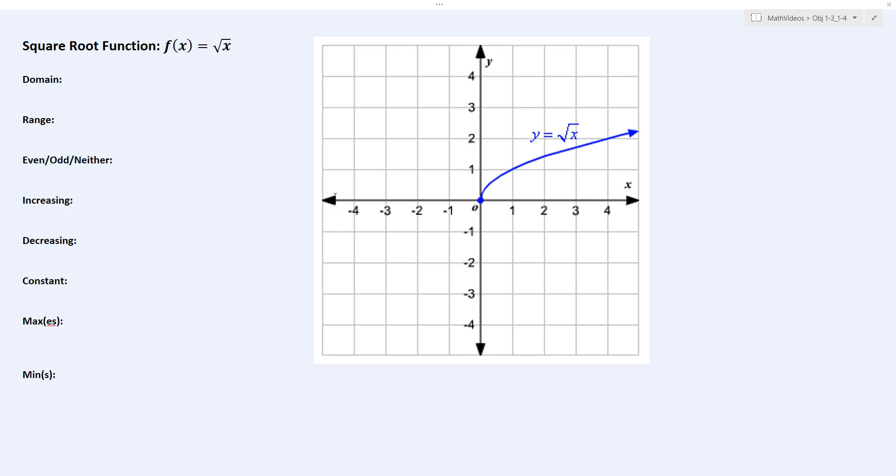you can see that it doesn't have any negative x-coordinates. In fact, it doesn't have an x-coordinate until you get to 0. And then as you move along, you can see that the positive x-coordinates do align with points on the graph.